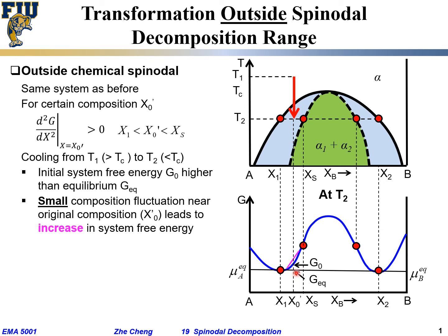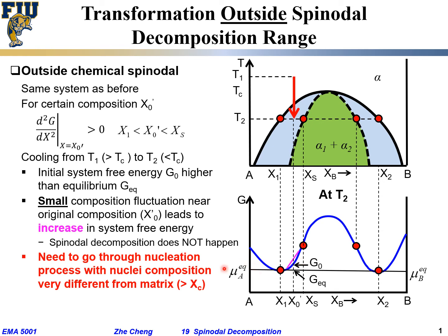From the initial state to equilibrium there is still a driving force, but spinodal decomposition doesn't happen because going from one composition to a neighboring one requires increasing energy. Instead, the system needs to go through the nucleation process — it needs to create a distinct interface between the new phase formed and the host or matrix phase.